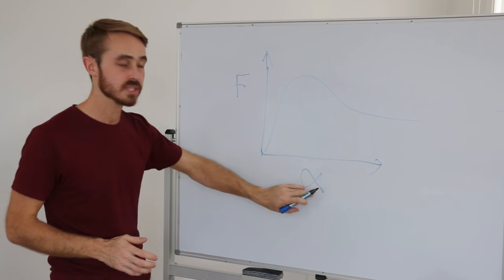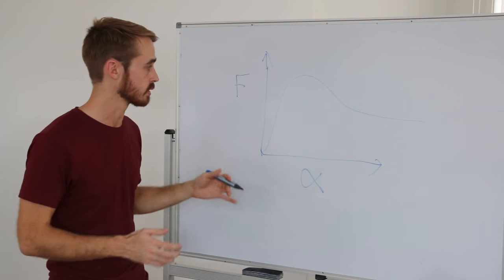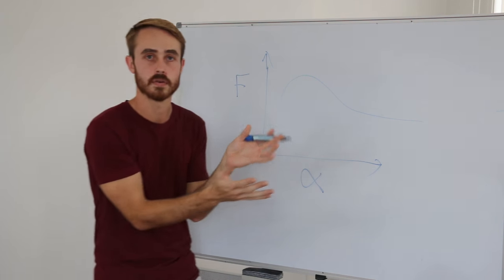Now because our alpha is roughly related to our deflection, we can imagine that this is the curve for a tire.